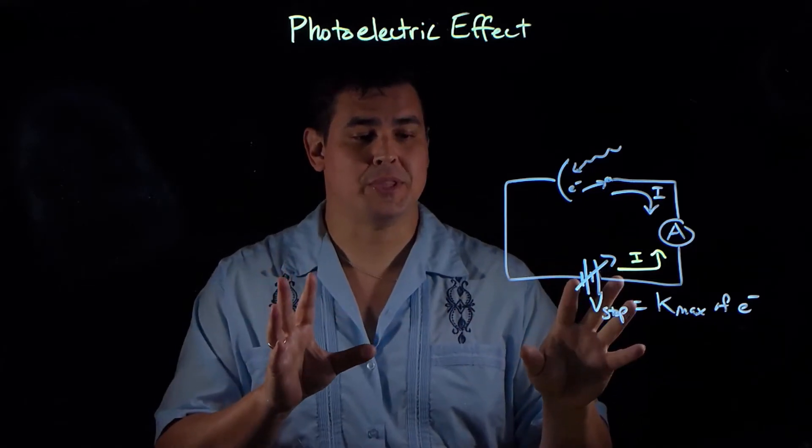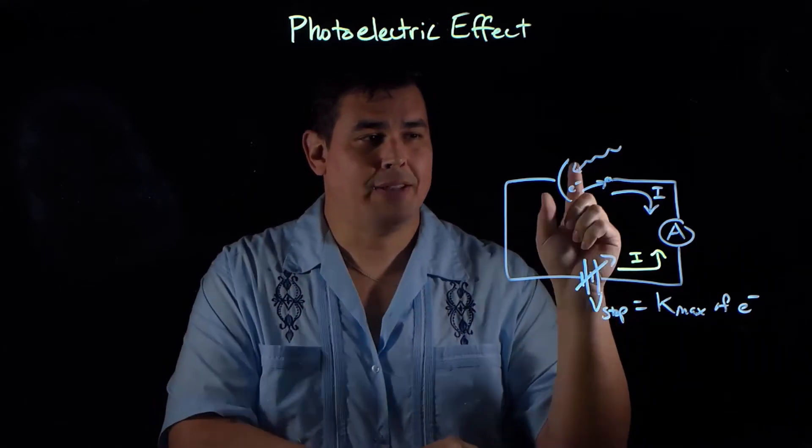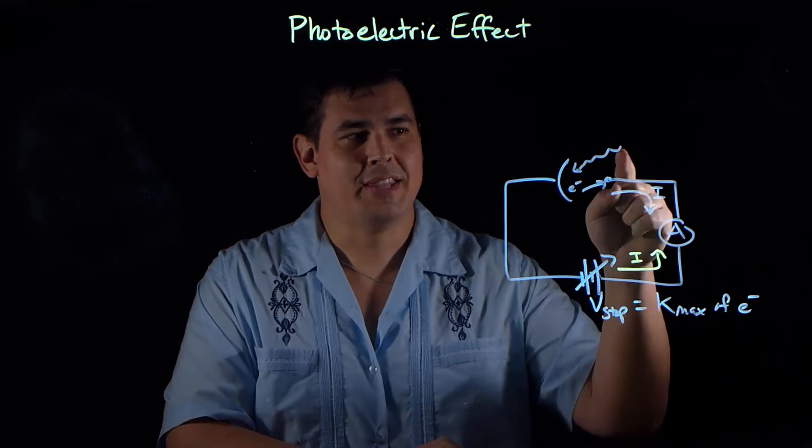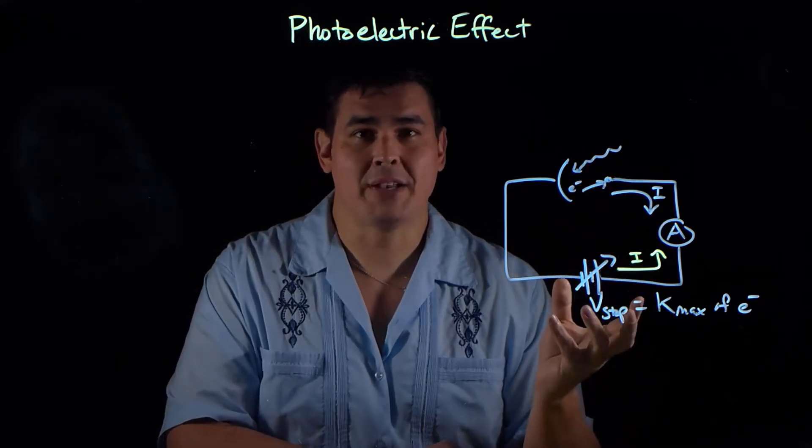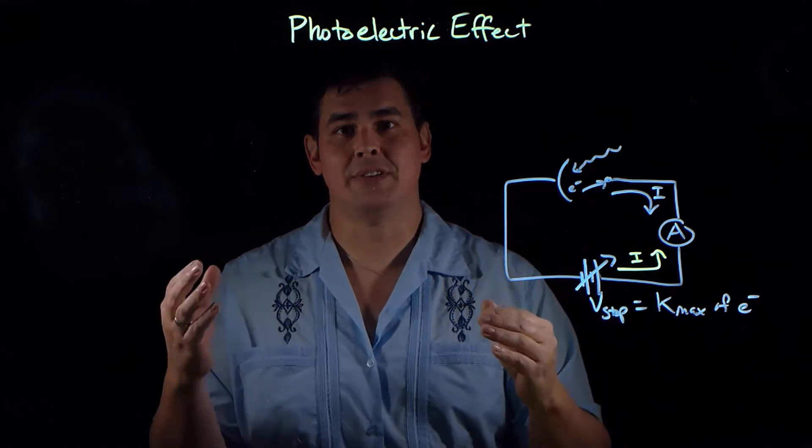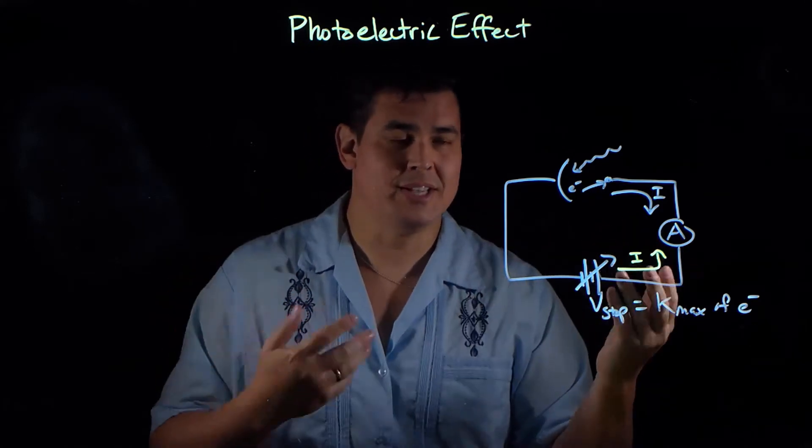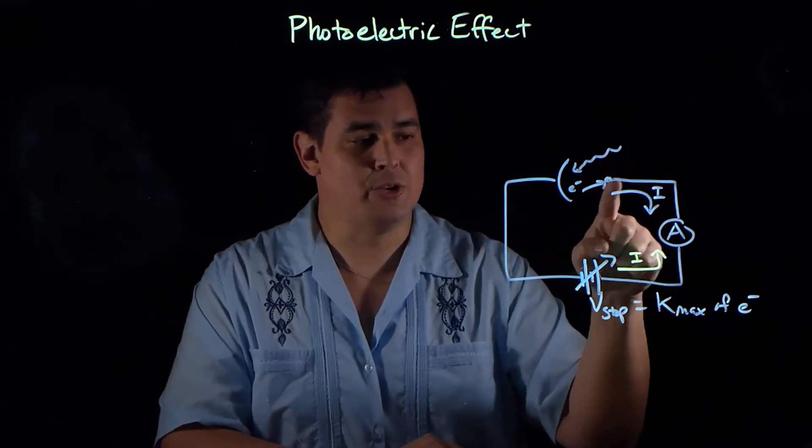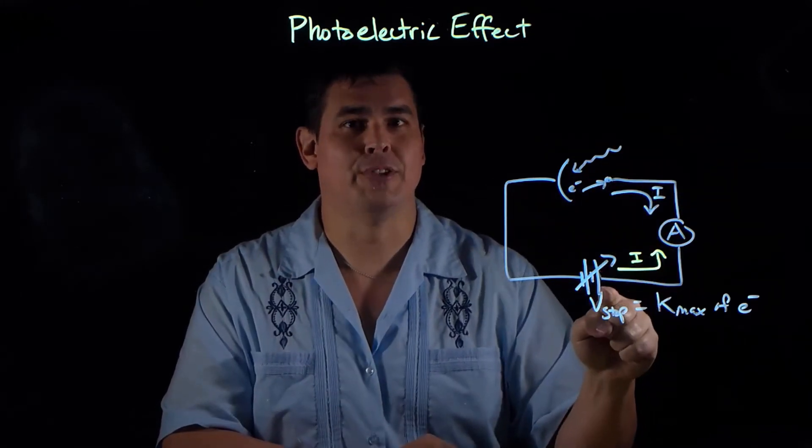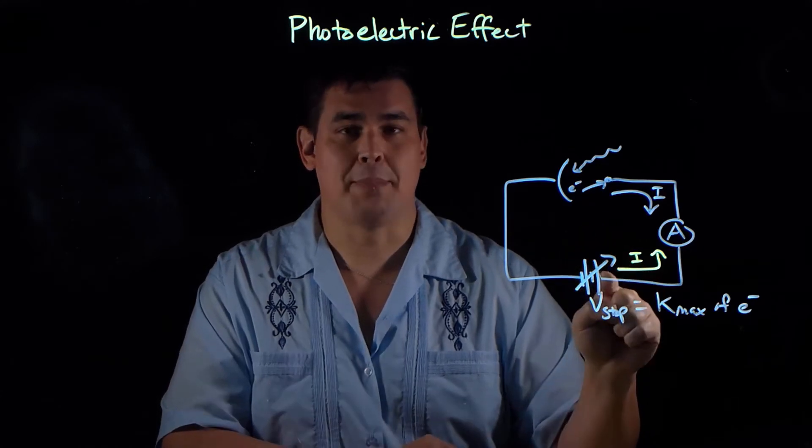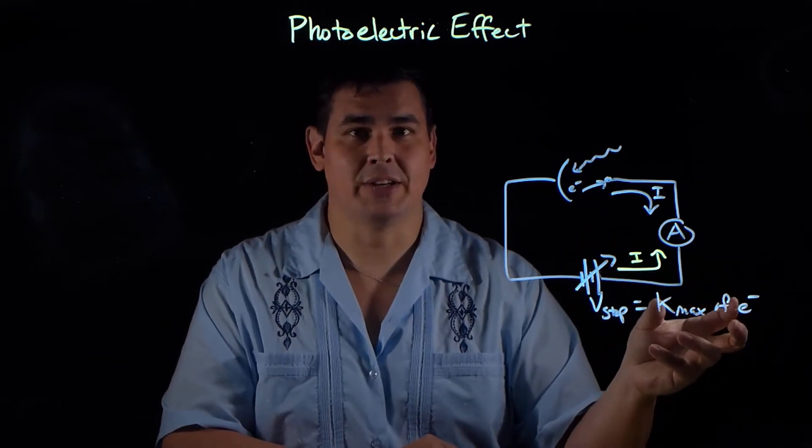So there are a few unanswered questions with this. First off, if light is really a wave, then the intensity of the wave should determine the energy. Because according to Maxwell's equations, the energy of a wave is proportional to the amplitude, which is intensity. So if you shine more intense light, you should see a bigger stopping potential, but they weren't seeing that. Shining more intense light made no difference for the stopping potential, which is the energy of those electrons.